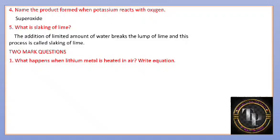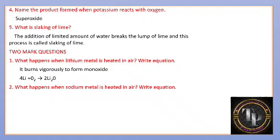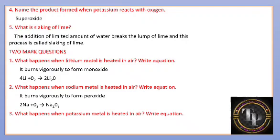What happens when lithium metal is heated in air? Lithium burns vigorously to form lithium monoxide, Li2O. What happens when sodium metal is heated in air? It burns very vigorously and gives sodium peroxide, Na2O2. What happens when potassium metal is heated in air? Superoxide is formed, KO2. Observe carefully: lithium gives Li2O, sodium gives Na2O2, and potassium gives KO2 — all are different.